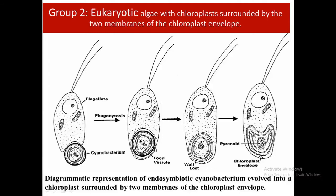In the process of evolution, the plasma membrane of the endosymbiont became the inner membrane of the chloroplast envelope, and the food vesicle membrane of the host became the outer membrane of the chloroplast envelope.